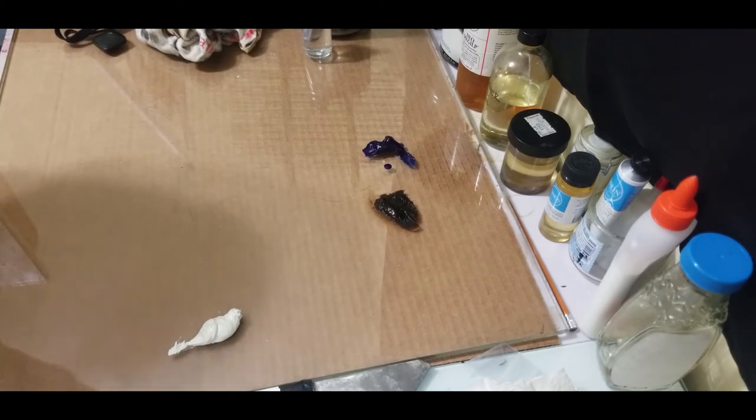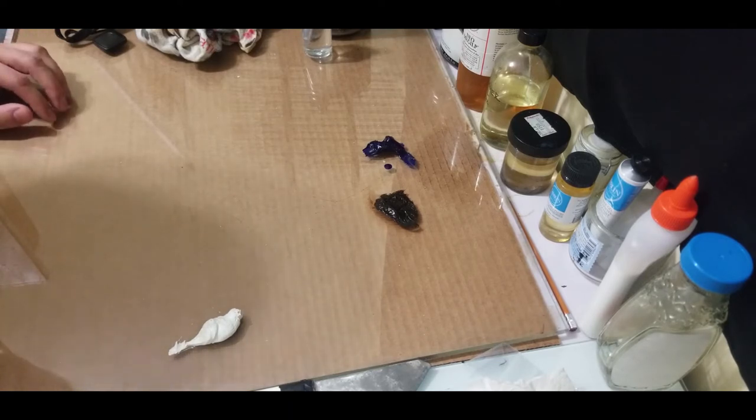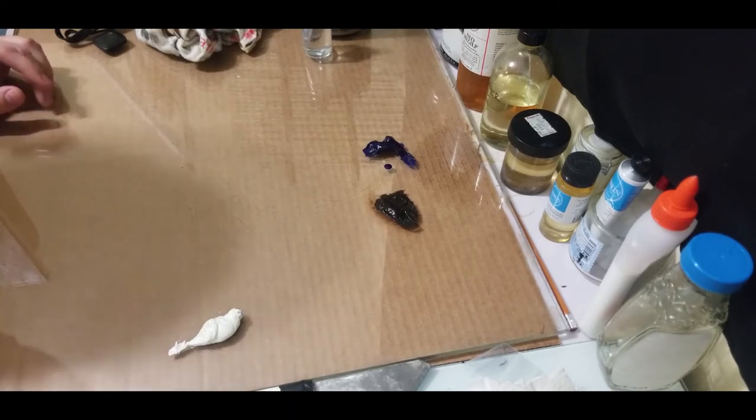In another video we could do a comparison of chromatic black versus a tube black like ivory black, but for now I'm just going to show you me mixing up my own little pile of black. We'll mix it into some white, in this case I have flake white replacement, and that's just to lighten it up so I can show you the variations and how you can push it to be a little warmer or a little cooler depending on what you're trying to do.